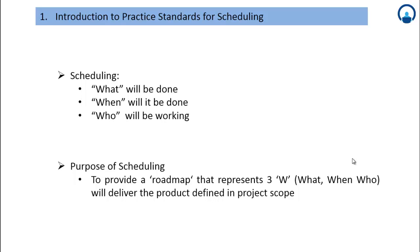The PMI looks at scheduling from a different perspective, focusing on three main areas: what will be done, when will it be done, and who will be working on it. The practice standards for scheduling defines two distinct terms: project schedule and the newly added schedule model. The terms scheduling method and tool were introduced to link the process areas in the PMBOK Guide with the high-level process flow of schedule development.